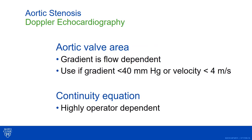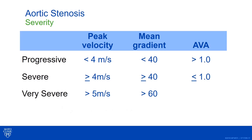Aortic valve area in the echo lab, however, is a calculated feature, which makes it prone to errors — particularly the LVOT diameter, which is squared in the formula. Any measurement errors in the LVOT diameter will grossly alter the aortic valve area. The definition of severe has changed over time: we're now at 40 millimeters of mercury for a mean gradient and 1 centimeter squared for severity. Very severe is defined by a peak velocity greater than 5 meters per second across the aortic valve.